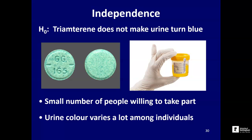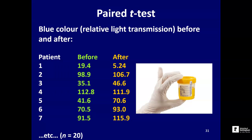Rather than taking two separate groups of patients — one given the drug and one given a control — especially given all this background noise and shortage of patients, there might be a better design: a paired experimental design. This allows us to economize on how many patients we use and helps address the fact that each person is very different. We'll do a paired study where each patient has their urine measured, then is given the drug, and then it's measured again, so each patient effectively acts as their own control.